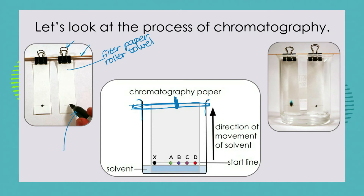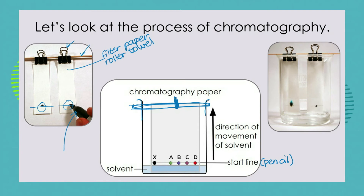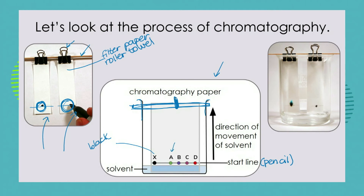Place little dots of ink on your starting line, which you can draw with a pencil — pencil is carbon, a completely different substance, and won't interfere with the chromatography. In this picture I'm showing black ink dots, but you can have a lot of fun adding other colours: a dot of green, blue, brown, purple, and red marker all along the start line. The black ink marked X is our test substance.